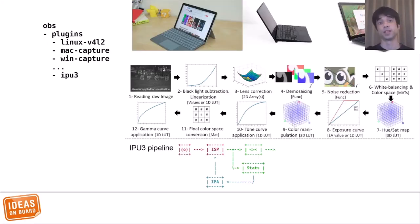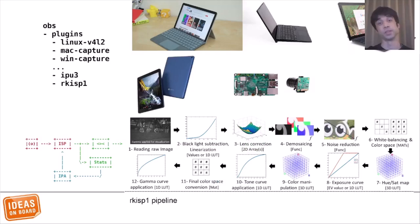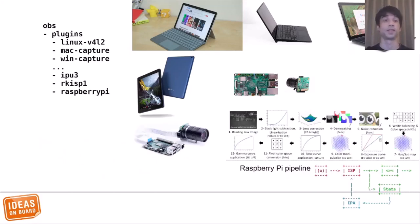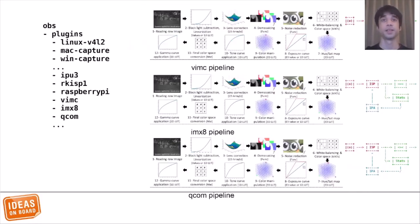But then you would also have to add an IPU3 source to support devices like the Dell Latitude, the HP Chromebook X2, and the various Microsoft Surfaces. And a Rockchip ISP source to support devices like the RockPi and the Acer Chrome Tab. And a Raspberry Pi source to support the Raspberry Pi. And a VimC source, and an IMX source, and a Qcom source, and so on.